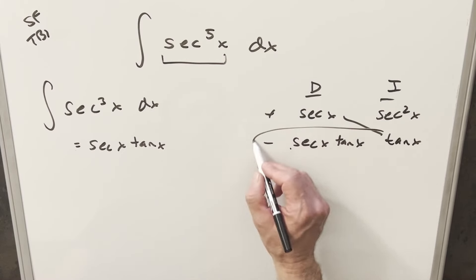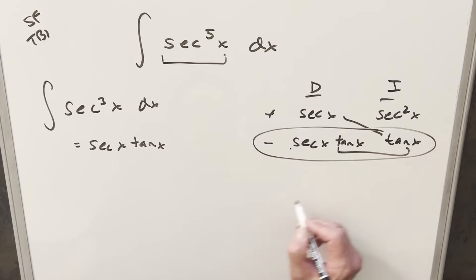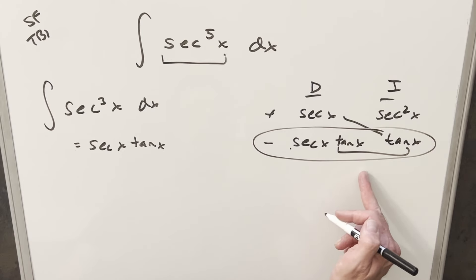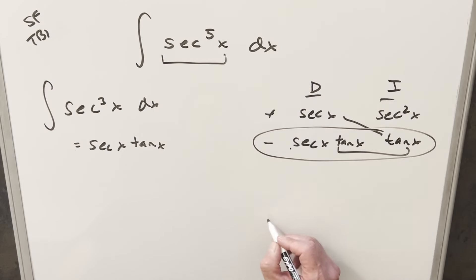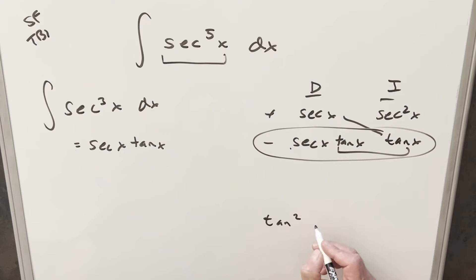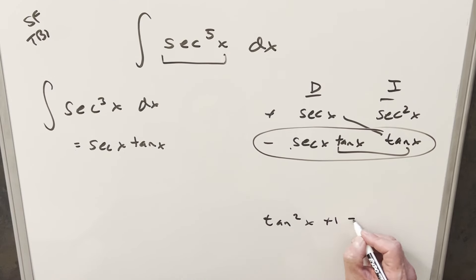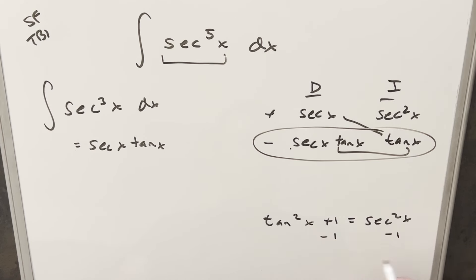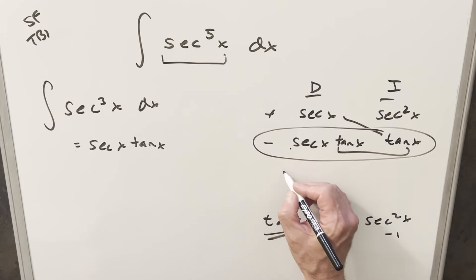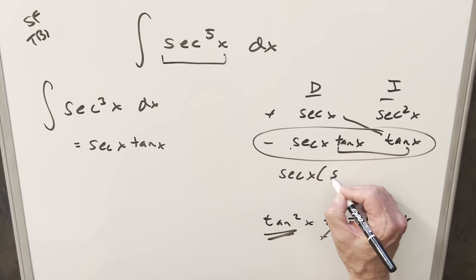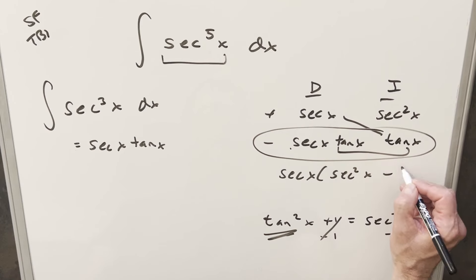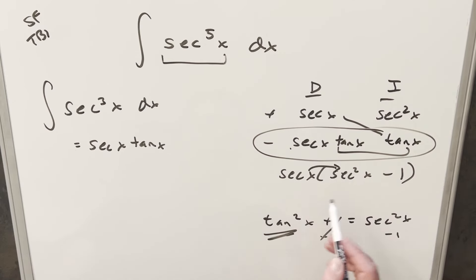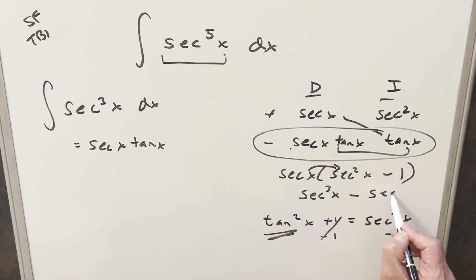We also have an integral of tan squared times secant x. I want to rewrite this in terms of secant using the identity tan²x + 1 = sec²x, so tan²x = sec²x − 1. Distributing, secant x times (sec²x − 1) gives us secant cubed x minus secant x.